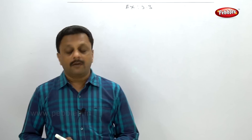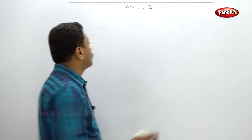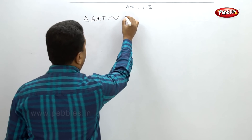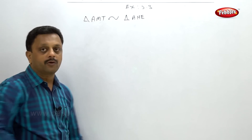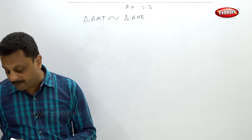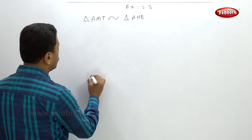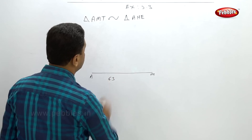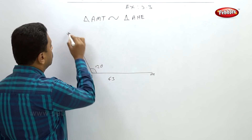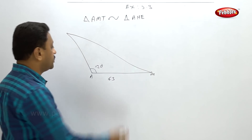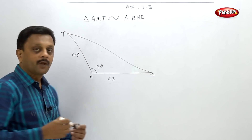This next example is from the March 2012 and October 2014 exams for 5 marks. Triangle AMT is similar to another triangle, and vertex A is common, so you have to solve by the graphical method. First draw triangle AMT — MA is 6.3, and angle MAT is 120 degrees, which is an obtuse angle triangle.